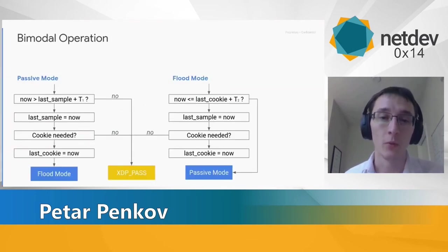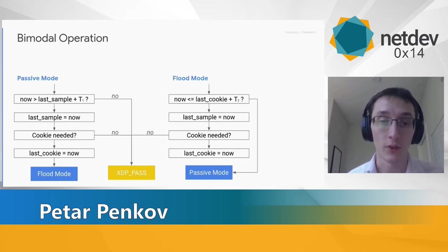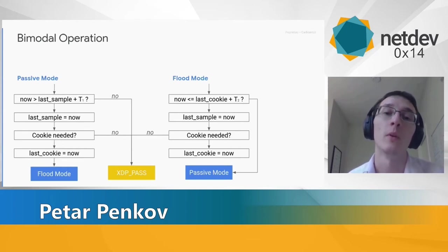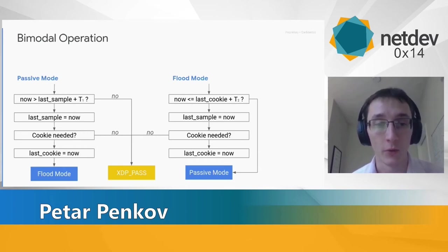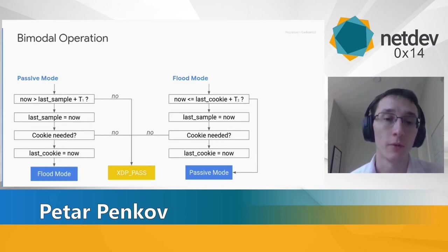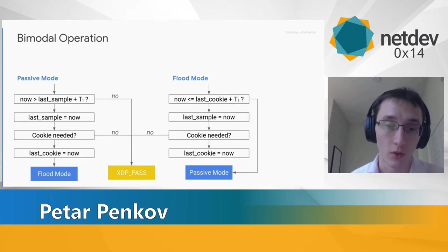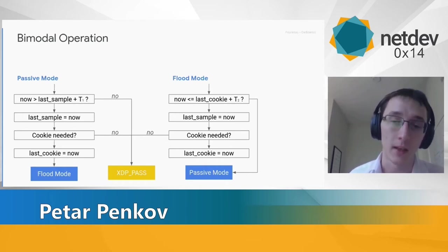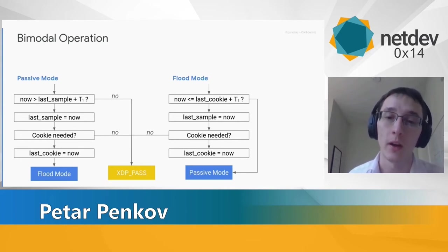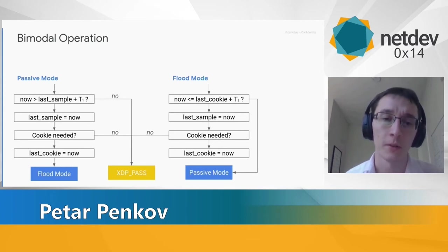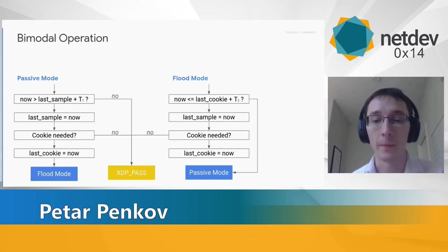To mitigate this, we define two modes of operation: flood mode for when under attack — where we try to issue SYN cookies for every packet — and a passive mode where we sample to determine whether we're under flood. We define a sampling interval T1, meaning we try to issue a cookie for a packet every T1 time units. If we successfully issue a SYN cookie, we enter flood mode for T2 seconds. T2 defines how long since the last issued cookie we keep trying to issue SYN cookies.